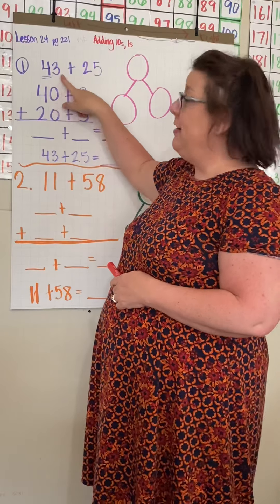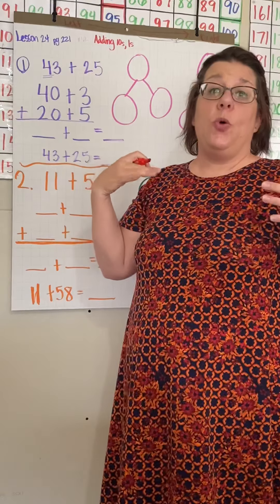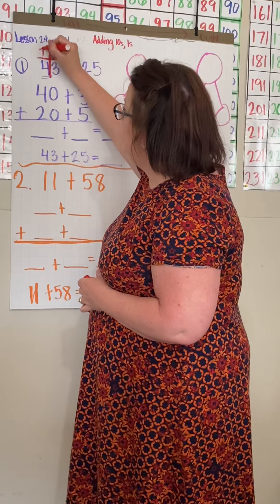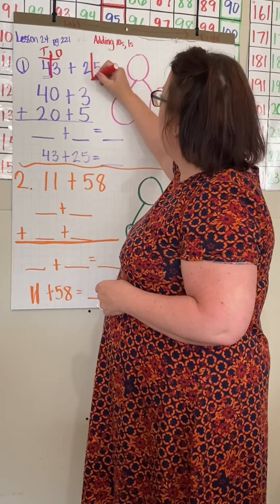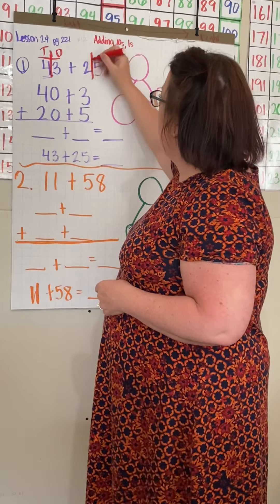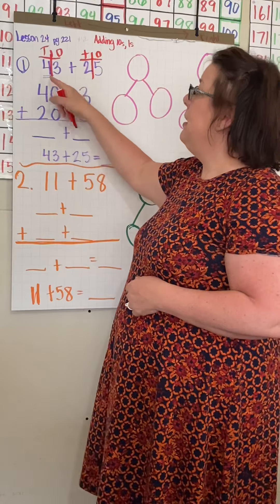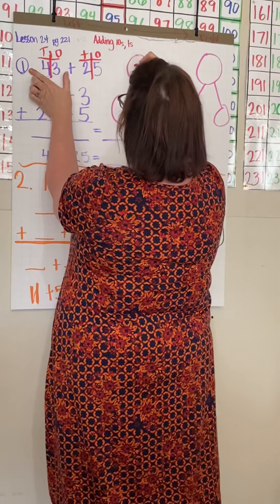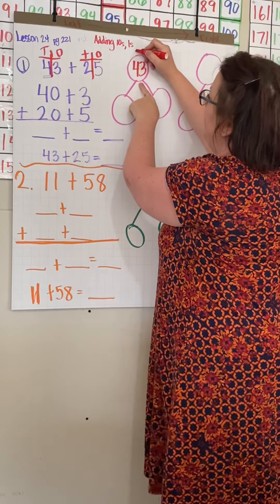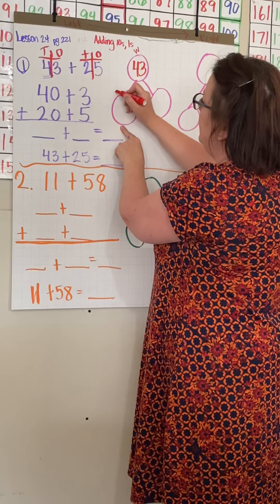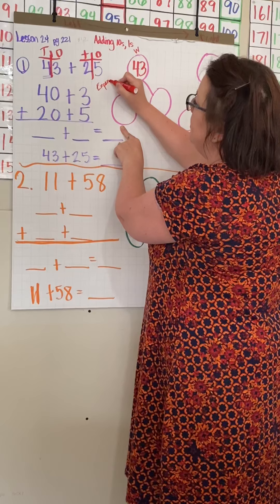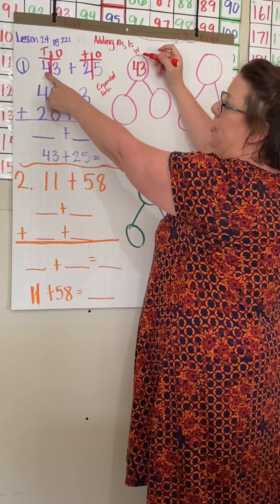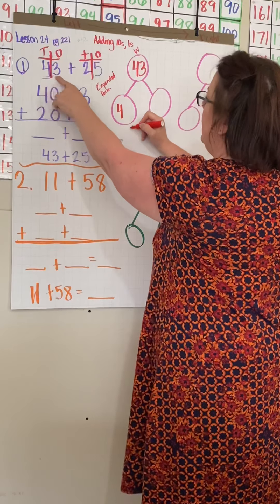So we have 43 plus 25. What we are going to do, just like we always do, let's make our t-chart and break that into tens and ones. We have our tens and our ones.